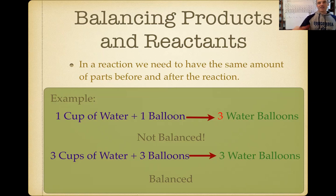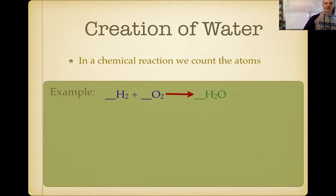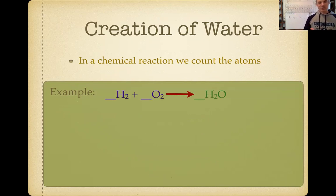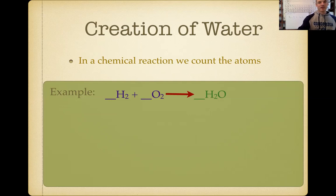Like a recipe, if you double the recipe you have to double all the ingredients. Here's a chemistry example: the creation of water using hydrogen and oxygen. We leave blank spaces to balance the reaction later. Write this down for number six: H₂ + O₂ → H₂O.